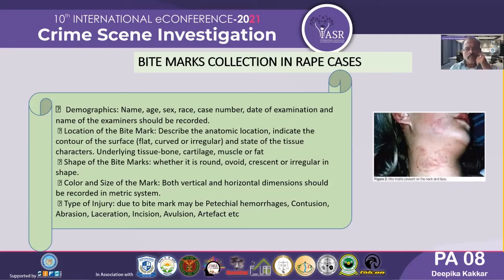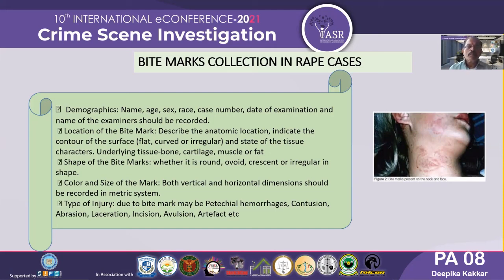The condition and curvature of the tissue should be noted, along with the underlying tissue type — whether bone, cartilage, muscle, or fat. The shape of the bite mark, whether round, ovoid, crescent, or irregular, should be properly documented. Color and size — with vertical and horizontal dimensions recorded using the metric system with proper scaling — are also important. The type of injury from the bite mark — whether petechial hemorrhages, contusion, abrasion, laceration, incision, evulsion, or artifact — should all be properly documented, as these parameters are critical in the chain of custody.